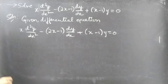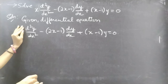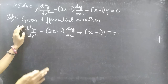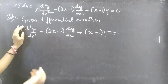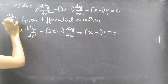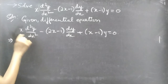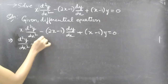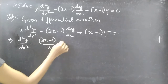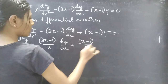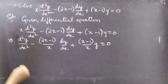Now we'll write the second order equation in standard form by making the coefficient of d²y/dx² equal to unity. To do that we divide the whole equation by x — that is, multiply both sides by 1/x. This gives: d²y/dx² minus (2x − 1)/x times dy/dx plus (x − 1)/x times y equals 0.